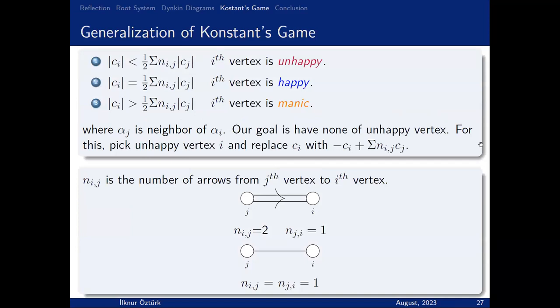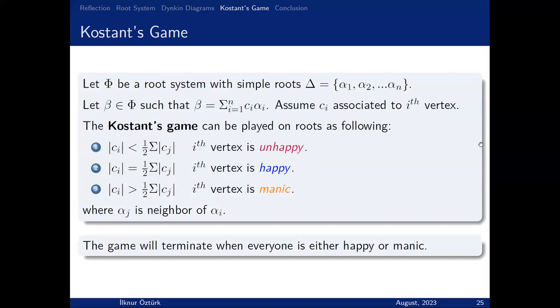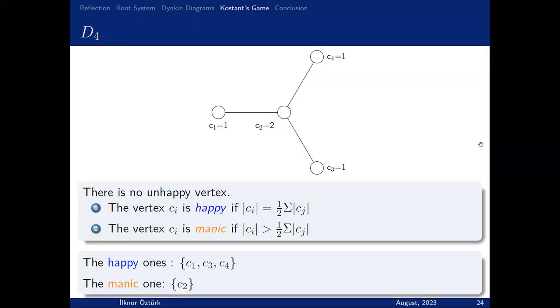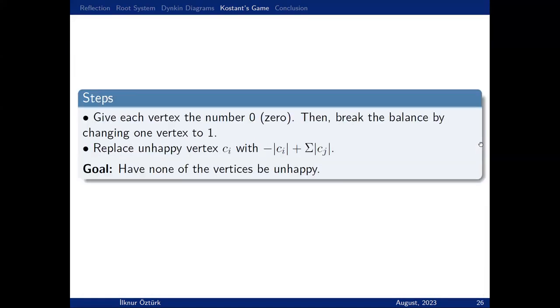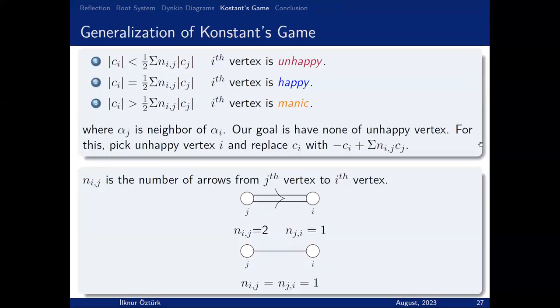This is a generalization. Remember, we played this game on D4. What do I mean by that? There are no arrows—there's just one directed double edge. But we want to play the same game on all Dynkin diagrams, and some of them have directed edges, so we have to generalize. We have to modify the game. There's just one modification: this coefficient E_ij, which is the number of arrows from C_i to C_j.